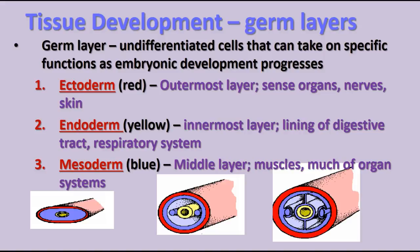The endoderm, the innermost part shown in yellow in the pictures, will become the digestive and respiratory tracts — both the lining and coverings of those. The third layer, the middle layer, the mesoderm, will become the muscles and much of the rest of the organ systems of the animal.